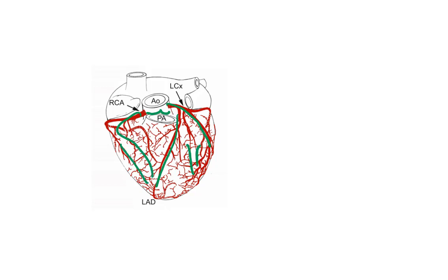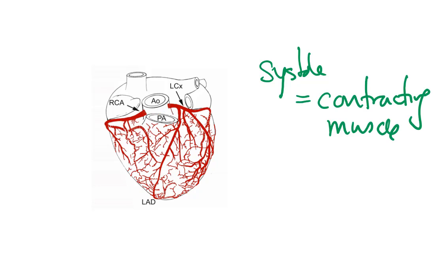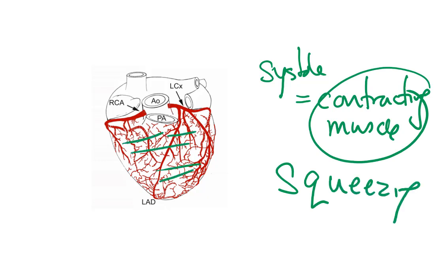However, during systole is when the heart muscle is contracting. Then what's happening are two things. Not only is the contracting muscle squeezing the coronary arteries, really kind of crushing them down, particularly the ones going down into the heart muscle itself, reducing flow.